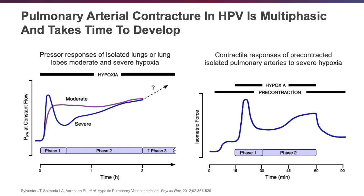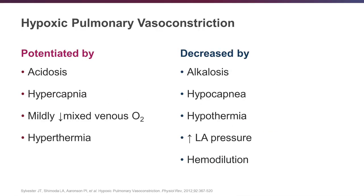When that pulmonary arterial contraction occurs, it can have a quick onset in a matter of seconds, but builds over time — even up to 120 minutes — in a phasic response. HPV is potentiated by acidosis, hypercapnia, a reduced mixed venous O2, and hyperthermia, and decreased by just the opposite. Additional things that can decrease hypoxic pulmonary vasoconstriction include elevated left atrial pressures and hemodilution.